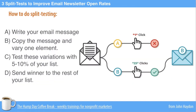The first step is to write your email message. Then you're going to copy this message and vary one element. The element might be the header image at the top of the email, particular calls to action, your subject line, the sender, the send time. These are different elements you can test with split testing. You'll make a copy of that message, change one element, and then test that variation with about 5% to 10% of your list. Then you send the winner to the rest of the list.